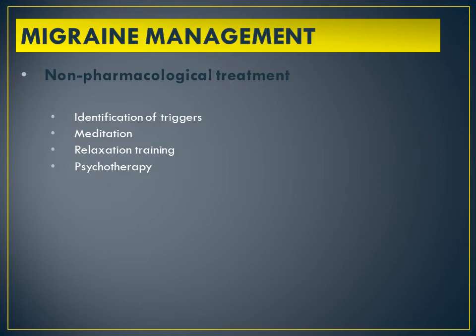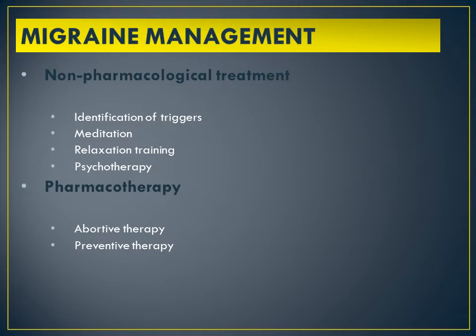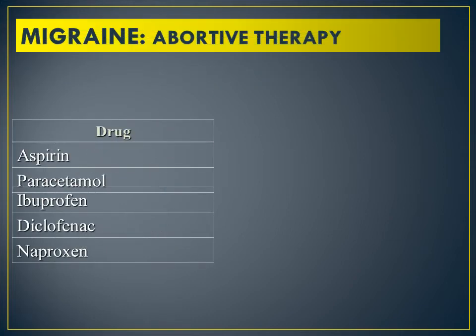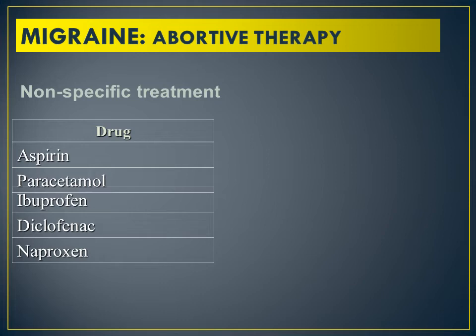Pharmacological therapy consists of abortive therapy for the acute attack and preventive or prophylactic therapy. Abortive therapy includes non-specific treatment such as painkillers and specific treatment using drugs that affect serotonin and blood vessels. The non-specific drugs include aspirin, paracetamol, ibuprofen, diclofenac, and naproxen — all non-steroidal anti-inflammatory drugs.